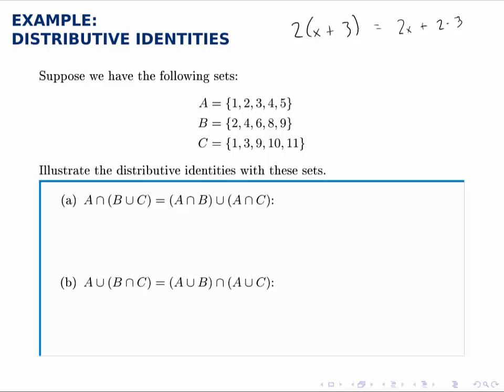We can do the same thing with the intersection operation and the union operation. Look at the first one, for instance in part A. Think of the intersection as multiplication and the union as addition, and we can say A times B plus C is like A times B plus A times C, and that's where that first distributive identity comes from.